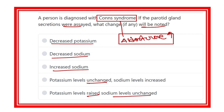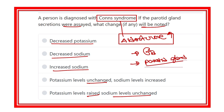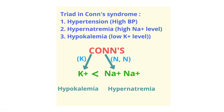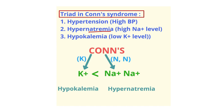Aldosterone acts on the kidney tubule — that is well known — but what is usually not known is that aldosterone also acts on the parotid gland and other salivary glands. So aldosterone acts on the parotid gland, and now we have to see the mechanism. This is the triad of Conn's syndrome.